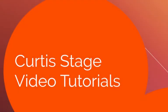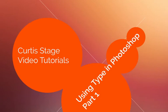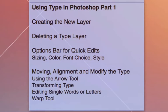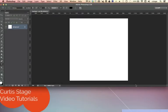Hi, welcome to Curtis's video tutorials. Today's tutorial is on using the type tool in Photoshop, and this is going to be part one. The things we're going to focus on are creating a new layer, deleting a type layer, talking about layers in general with type, the options bar for quick edits such as sizing, color, font choice, style, using the move tool, transforming type, editing single words or letters, and the warp tool.